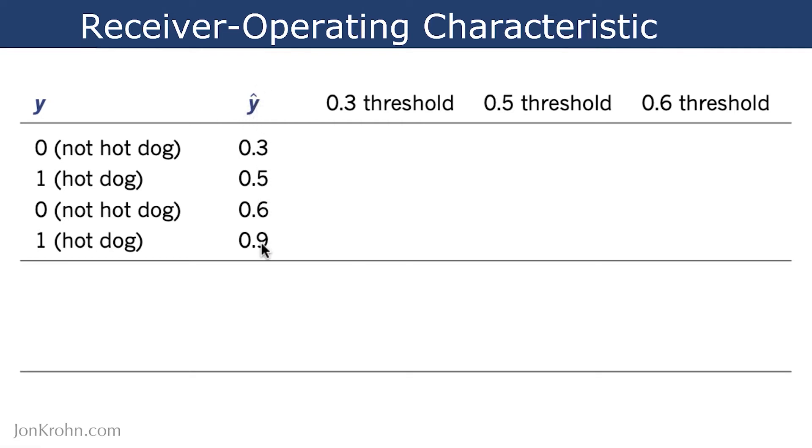our model's prediction as to whether a hot dog is present or not. So the first step is to consider this point here, this 0.3, the lowest y-hat value, as the threshold as to whether this is a hot dog or not.